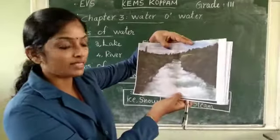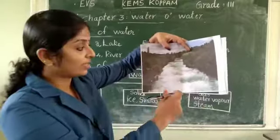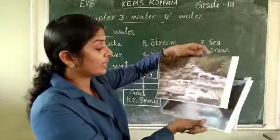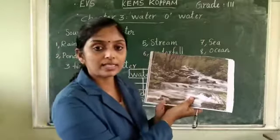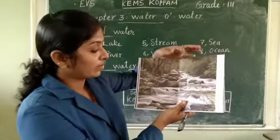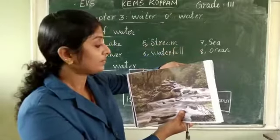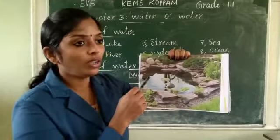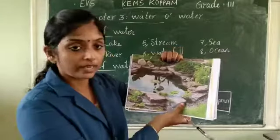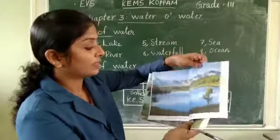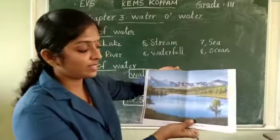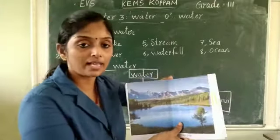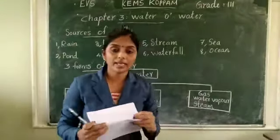Next picture — water is flowing and it is very large, so this is a river. Then what is this? This is a stream — you can see it is a very narrow one. Next is a pond — it is a very small and still water body. And next, this is a lake — it is larger than a pond and also surrounded by land.